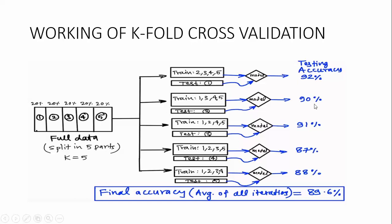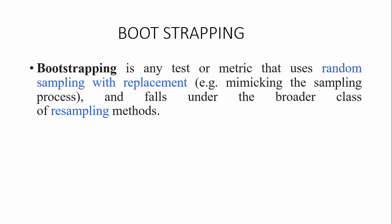Based on the algorithm being used, the accuracy level is calculated for that sample. We repeat this for each fold — for example, considering part three as test data, then part four, then part five — and calculate the accuracy at each step. After completing all iterations, we find the final accuracy as the average of all iterations. This determines how efficiently the training and testing data have been split, and whether the data is well fitted to the model.